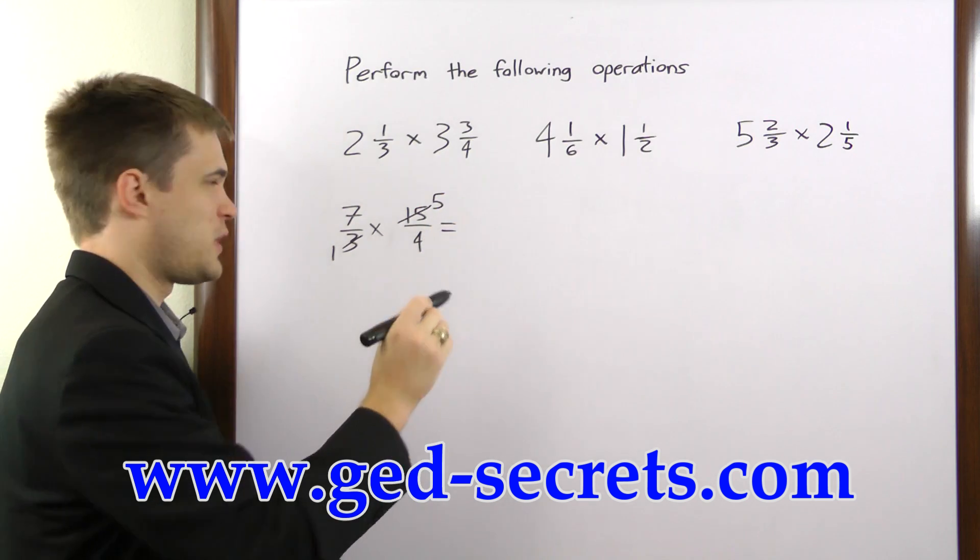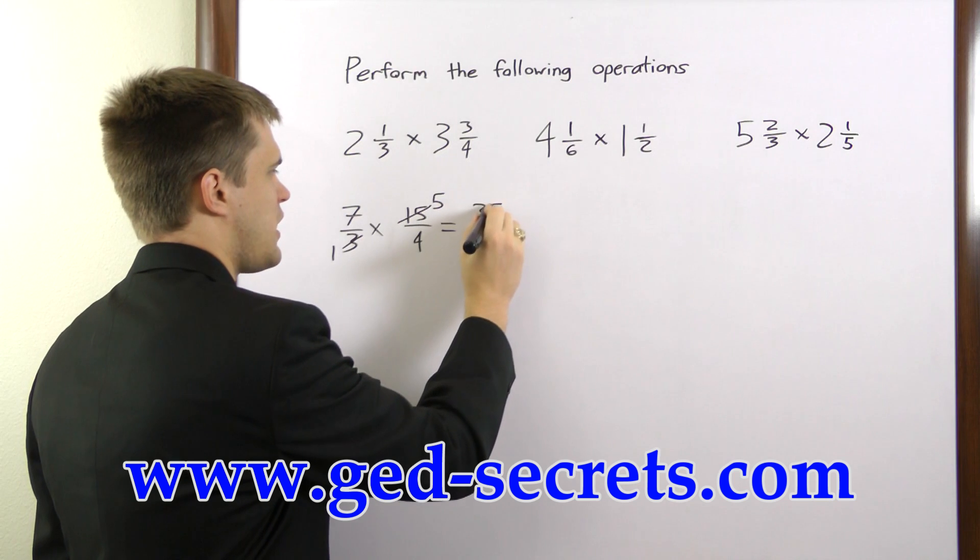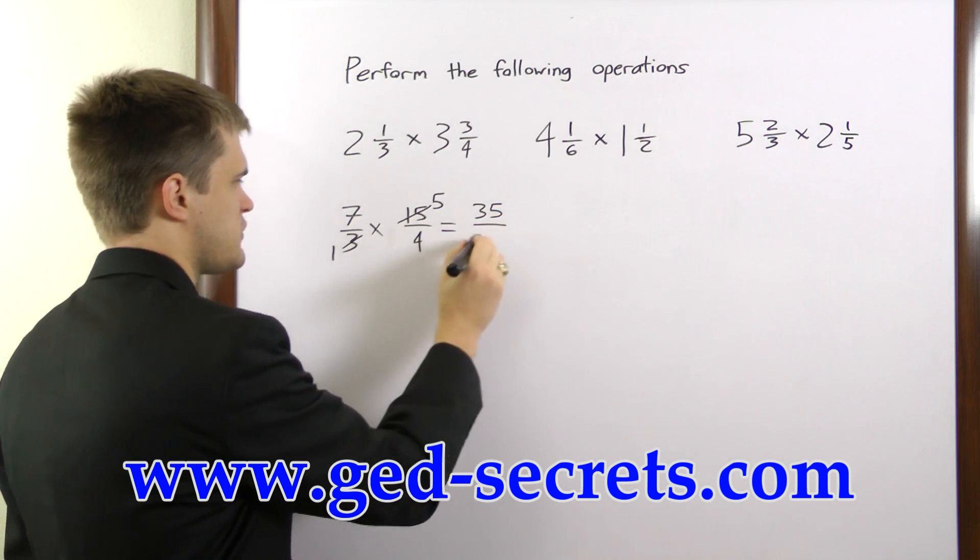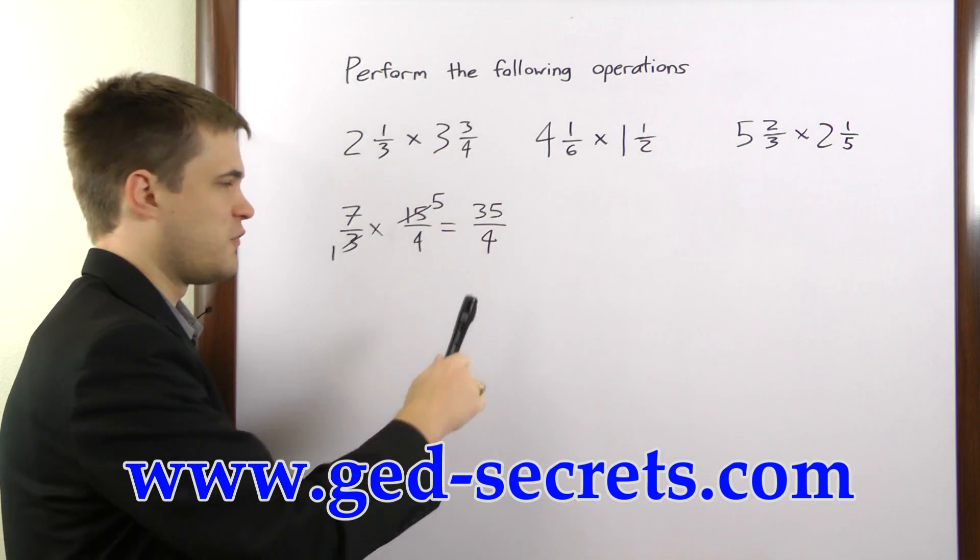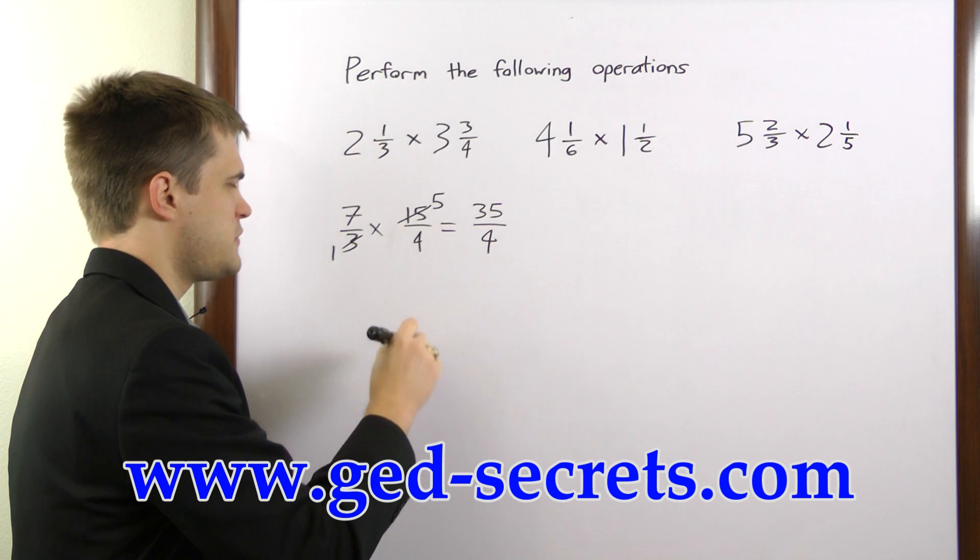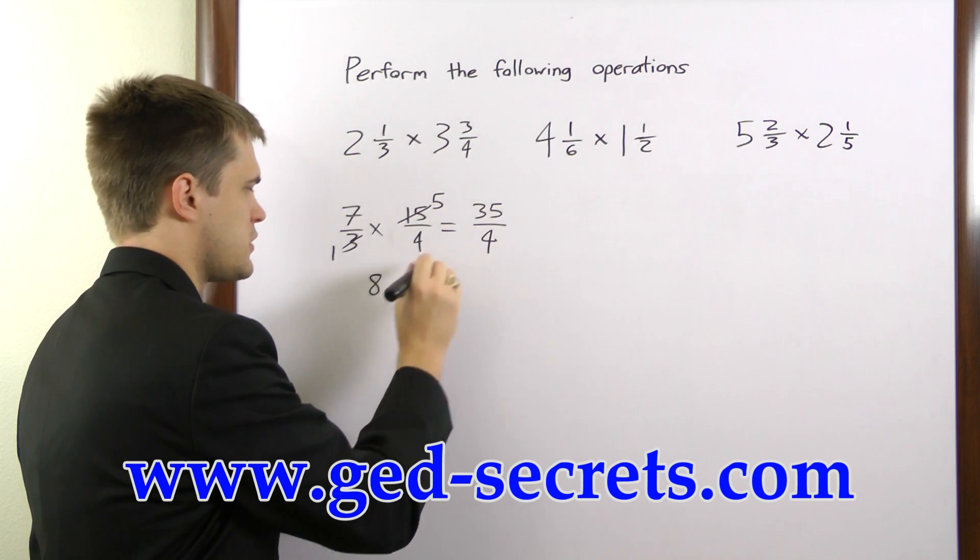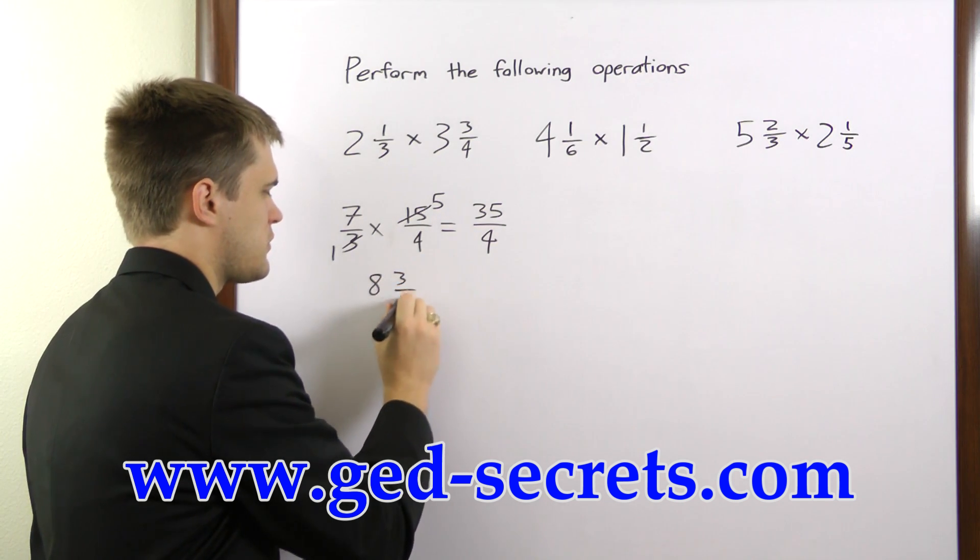Now, we can multiply. 7 times 5 is 35. 1 times 4 is 4. Now, 4 goes into 35 8 times, with a remainder of 3, so our answer is 8 and 3 over 4.